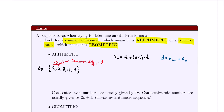With this formula in mind, what would be the formula for the nth term of the sequence 2, 5, 8, 11, and 14? We see that a1 is 2 and the common difference is 3. So a sub n equals 2 plus (n minus 1) times 3. Distributing the 3: a sub n equals 2 plus 3n minus 3, which simplifies to 3n minus 1.